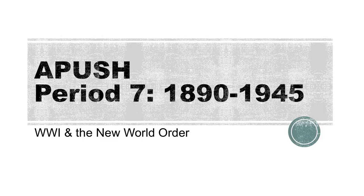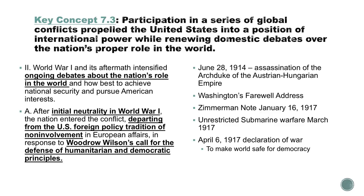Hello again. Welcome to another YouTube video on Period 7, 1890 to 1945. This is our third of the videos — we did one on foreign policy, one on progressivism, and now we're doing World War I and the New World Order. I'll try to go through this a little quicker. You'll have PowerPoint notes on Edmodo to follow along, and we'll discuss more in class, especially with Woodrow Wilson's war message. We're predominantly going to be in 7.3, although at one point I'll pull us into 7.2.